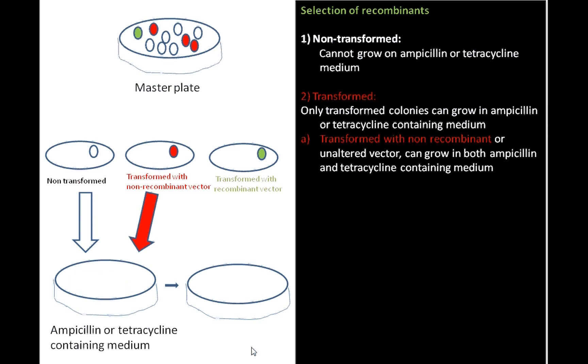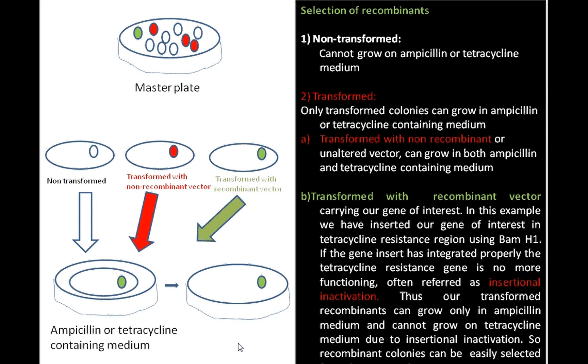Then, the third category, third type of colonies, that is transformed with recombinant vector, our gene of interest is inserted. So, we need to pick out these colonies. Growing such colonies on ampicillin and tetracycline medium, the result is, in this example, we have incorporated our gene of interest in BamHI tetracycline region site. The transformed with recombinant vector carrying our gene of interest in this example, if the gene insert has integrated properly, the tetracycline region gene is no more functional due to insertion or inactivation. Thus, our transformed recombinants can grow only in ampicillin medium and cannot grow on tetracycline medium due to insertional inactivation. Recombinant colonies can be easily selected from the master plate.